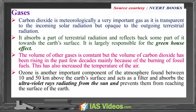Ozone is another important component of the atmosphere, found between 10 and 50 km above the earth's surface. It acts as a filter and absorbs the ultraviolet rays radiating from the sun, preventing them from reaching the surface of the earth.